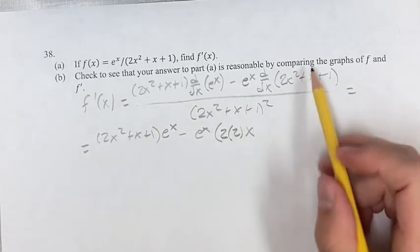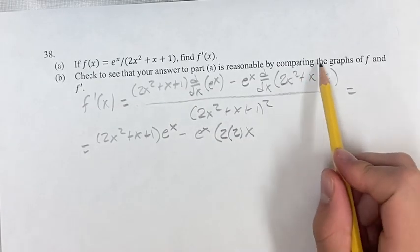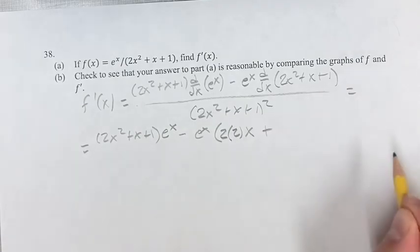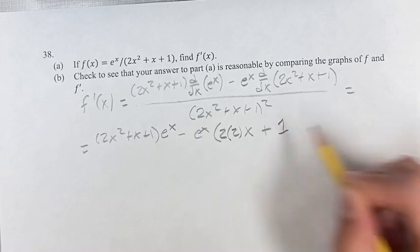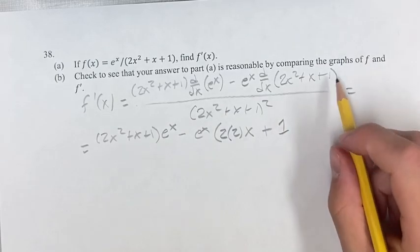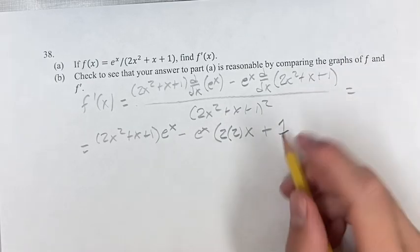and then you lower the exponent by 1. So 2 minus 1 is x to the first power, which is just x, plus the derivative of x. It's a linear term, so its derivative is just its coefficient, which is 1, plus the derivative of 1 is just plus 0.